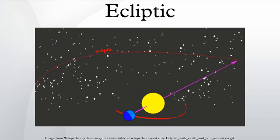The path of the Sun is not normally noticeable from the Earth's surface because the Earth rotates, carrying the observer through the cycle of sunrise and sunset, obscuring the apparent motion of the Sun with respect to the stars.